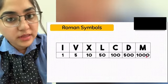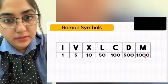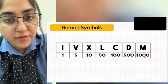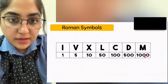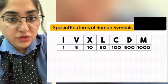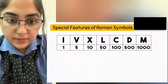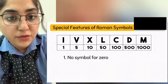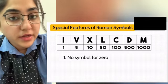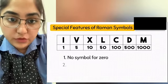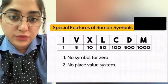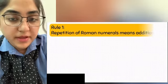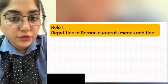So students, these are the 7 Roman numeral symbols. Now the next topic is special features of Roman symbols. In the Roman numeral system, there is no symbol for 0 and also there is no place value system. Now let's understand the basic rules to write Roman numerals.